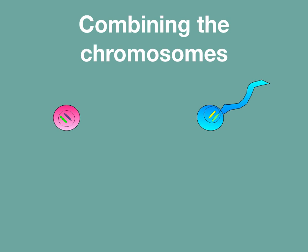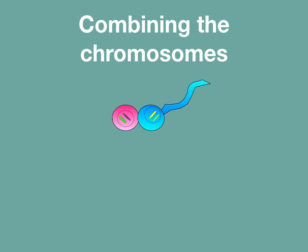The egg from the female combines with the sperm from the male. When this happens, the chromosomes from each parent combine to create a new offspring with a full set of chromosomes.